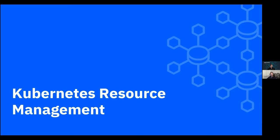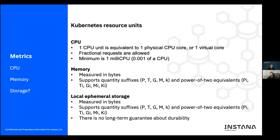Let's go ahead and talk about Kubernetes resource management. When we talk about a resource in Kubernetes, we mainly talk about CPU and memory — those are the most important resources that Kubernetes manages, and the ones taken into account when Kubernetes schedules pods or containers in the cluster. One CPU unit is equivalent to one physical or virtual CPU. You can allocate fractional parts of a CPU to a workload, and the minimum you can assign or request for a container is one milli CPU, which is a thousandth of a CPU.